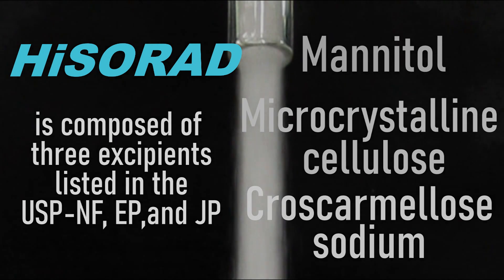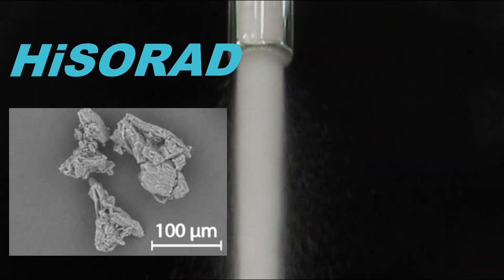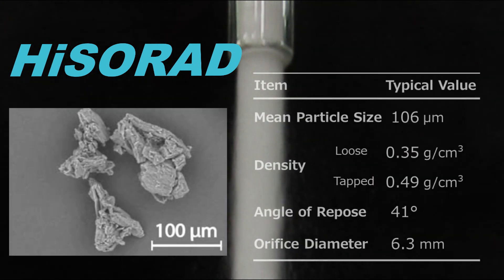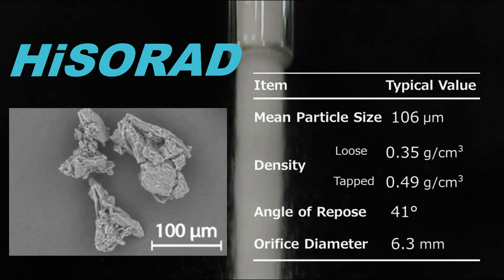These three ingredients are co-processed into non-spherical shaped particles. The particle has a mean diameter of around 100 microns.